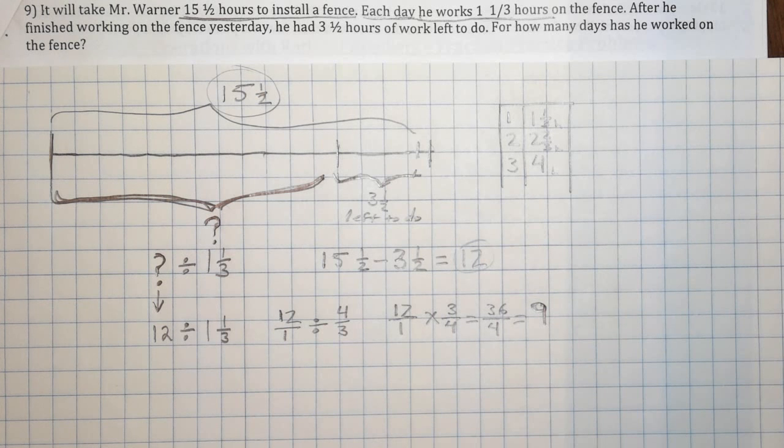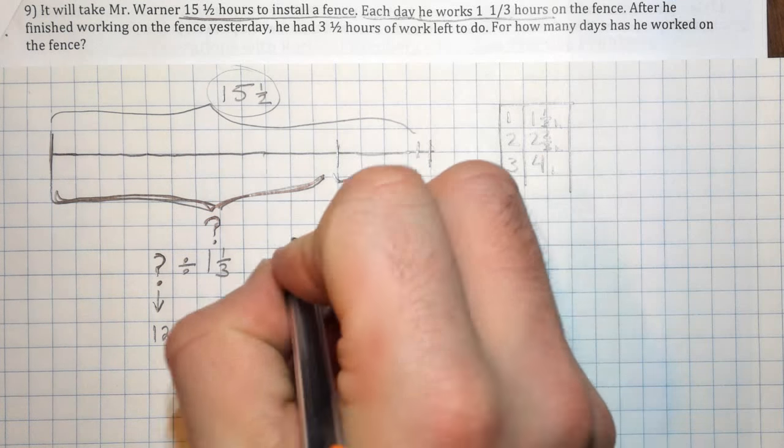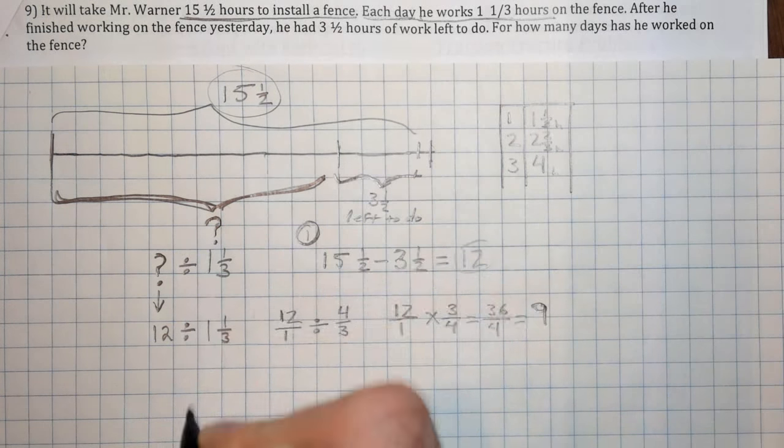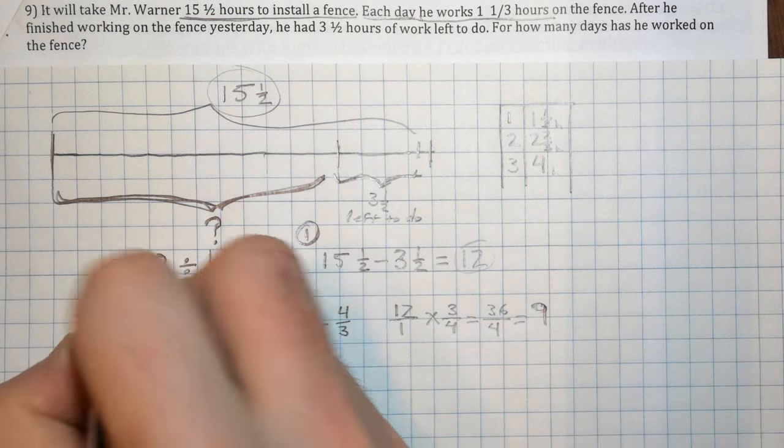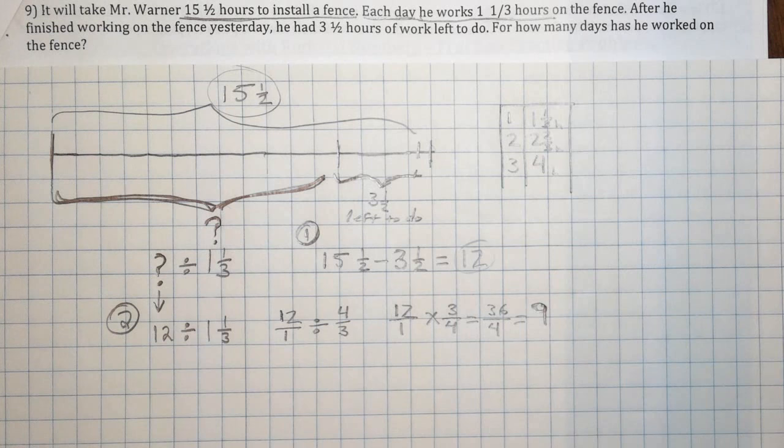That would be our answer to this problem. So it was a multi-step problem. Step one was up here, then step two would be actually solving the final division problem. Once again, this is a great question to understand. One of the more difficult ones that we've experienced this unit. So if you have any further questions, definitely feel free to ask away in class.